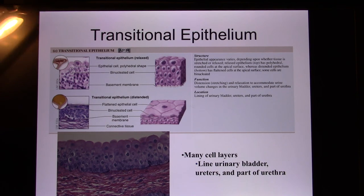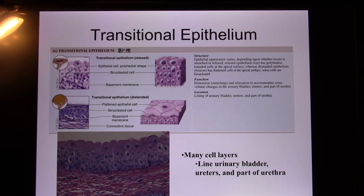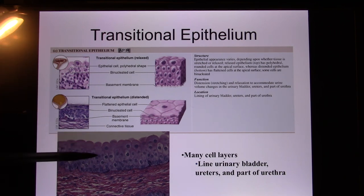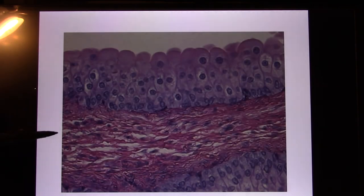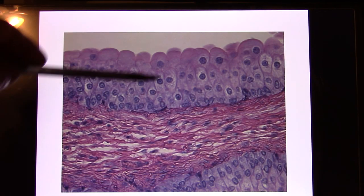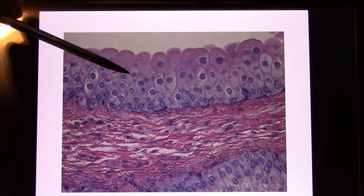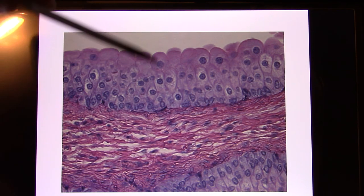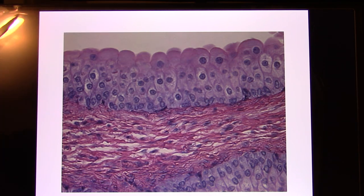Next is transitional epithelium — multiple layers where the number of layers can change. In your body this is found in the urinary bladder, which can expand to accommodate urine, causing the layers to decrease from about 10 to 8 to 6. On a fixed slide you can identify it by shape — the cells look like water droplets or bubbles. Transitional epithelium is found in the renal and urinary system.